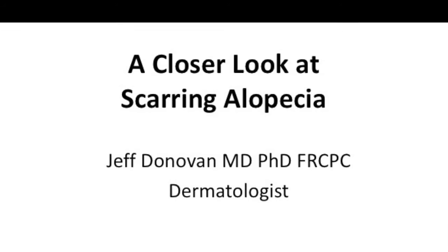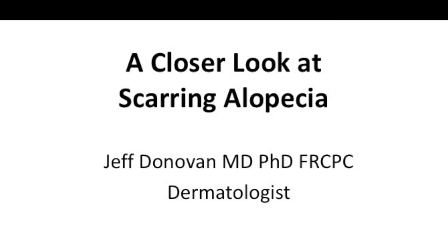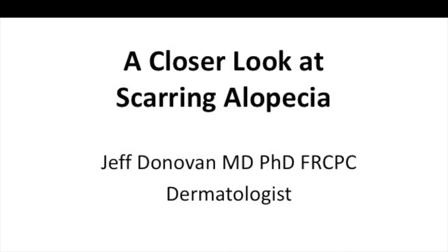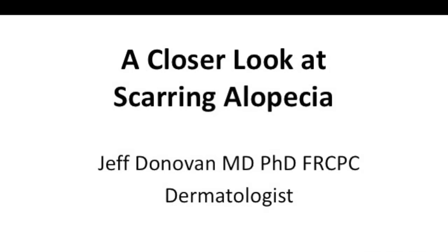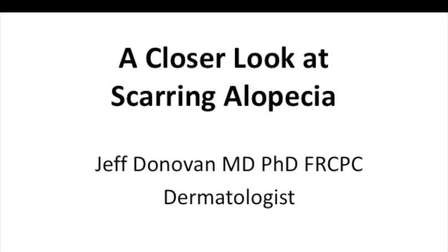In the general population these conditions are relatively rare. In my practice, however, I see a very large number of patients with scarring alopecias. What unites all of these scarring alopecias is the formation of scar tissue under the scalp — that's why they're referred to as the scarring alopecias. Scarring refers to this development of scar tissue, and alopecia refers to hair loss. The scar tissue destroys hair follicles such that hair is unable to regrow, and generally regrowth is impossible.